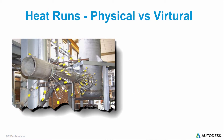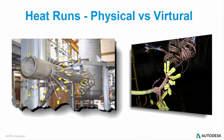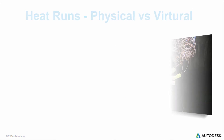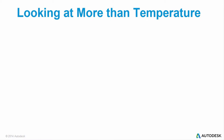Heat runs with thermocouples take a lot of time to set up and only provide results at predetermined data points. Digital prototyping provides visual comparisons and point data without any wires getting in the way. CFD also provides temperature related results that can't be gathered from a physical test.